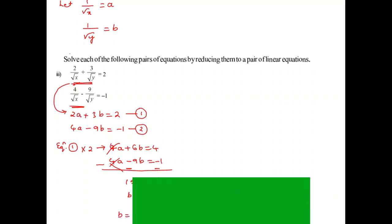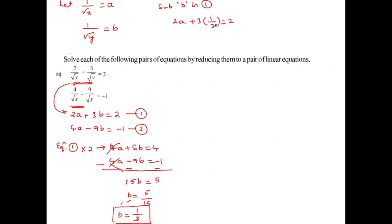So B equals 1 by 3. Substituting B into equation 1: 2A plus 3 times 1 by 3 equals 2. The 3 cancels, leaving 2A plus 1 equals 2. Shifting gives 2A equals 1, so A equals 1 by 2.